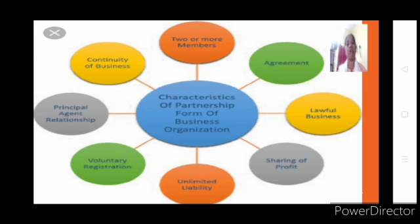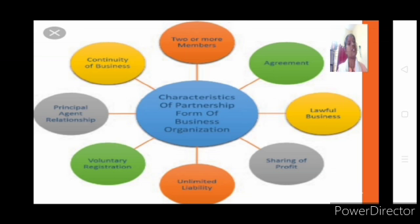When you are binding other partners through your act you are called an agent; when you are bound by some other partner's act you are called a principal. That is mutual agency — a special feature of the partnership firm. The next feature is continuity of business. We saw lack of continuity as a demerit of sole proprietorship: if something happens to the sole proprietor, the business may or may not continue because family members may not be interested to run it.